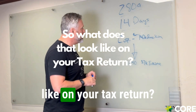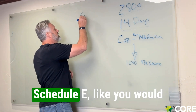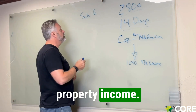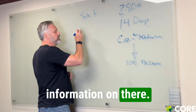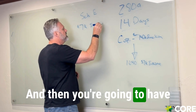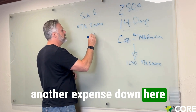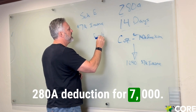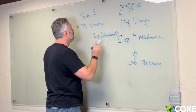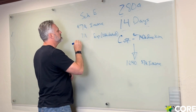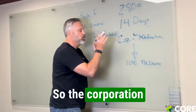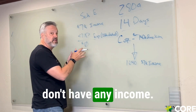So what does that look like on your tax return? You're going to put that on Schedule E, like you would any other rental property income. You're going to list your residence and the other information on there, you're going to show $7,000 as income, and then you're going to have another expense line called the 280A deduction for $7,000, leaving you with no taxable income. So the corporation gets a deduction and you don't have any income.